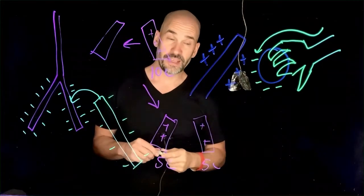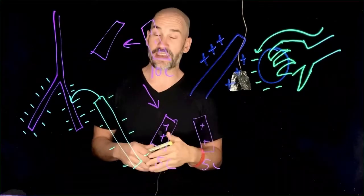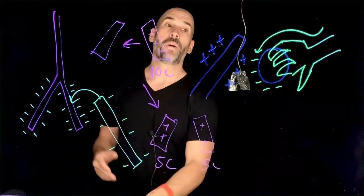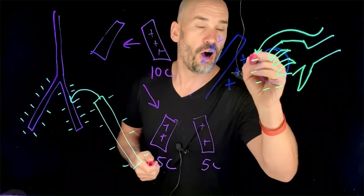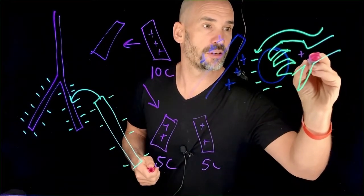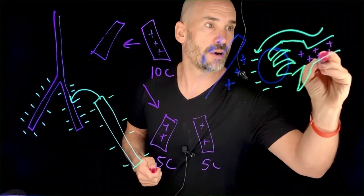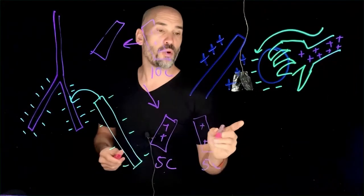Now, only problem is that leaves you with a net what? Positive charge, right? So all those electrons go over there. That's going to leave a bunch of positive ions in the arm.